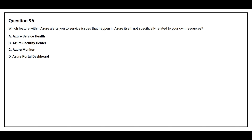Question number 95: Which feature within Azure alerts you to service issues that happen in Azure itself, not specifically related to your own resources? Option A: Azure Service Health. Option B: Azure Security Center. Option C: Azure Monitor. Option D: Azure Portal Dashboard. The correct answer is Option A: Azure Service Health.